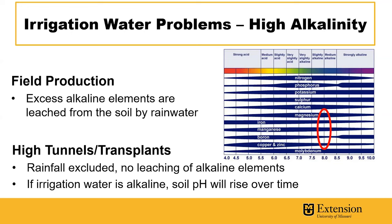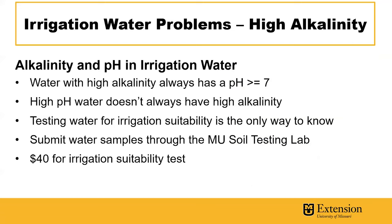You can see in the chart showing availability of different nutrients at different acidity and alkalinity ranges. You can see the red circle — things like magnesium, iron, manganese, boron, copper, and zinc can all have reduced availability when alkalinity rises.